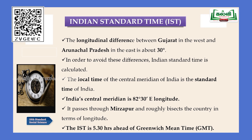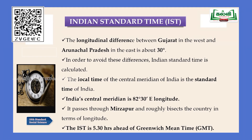The standard meridian of India is 82 and a half degrees east longitude. This is obtained by adding 68 degrees 7 minutes east longitude and 97 degrees 25 minutes east longitude, then dividing by 2, giving 82 and a half degrees east longitude. This meridian passes through Mirzapur in Uttar Pradesh and rifely bisects the country in terms of longitude. This Indian Standard Time is referred to as IST.